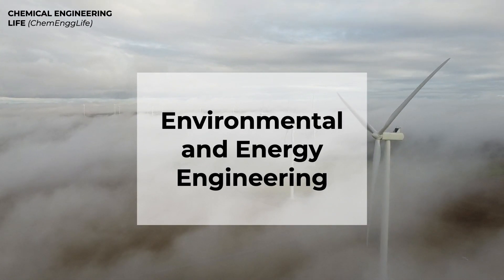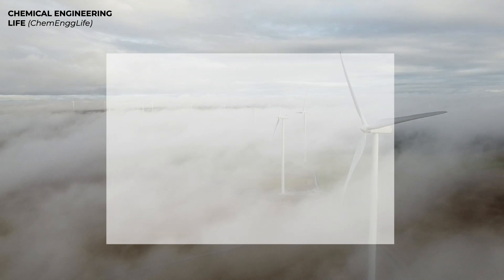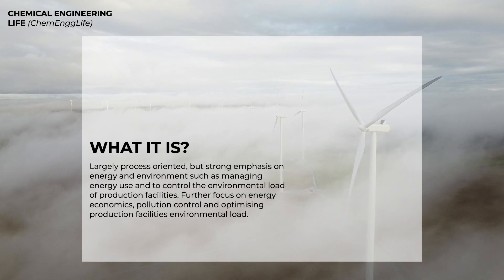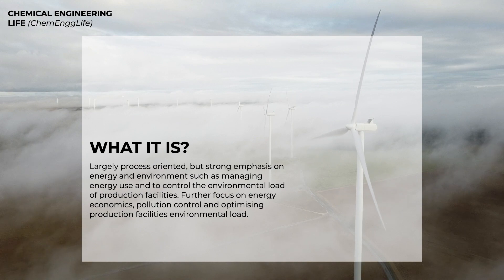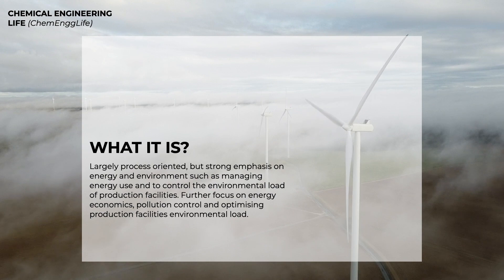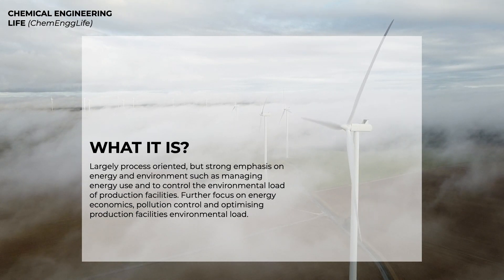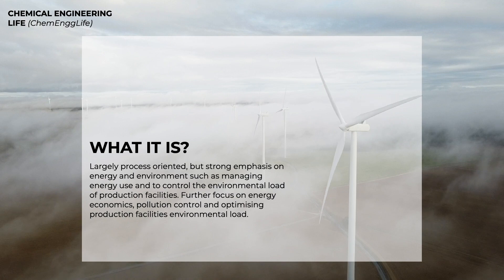Another specialization line for chemical engineers is the environmental and energy engineering line. Now, many people tend to confuse this with the actual environmental engineering degree, but you have to remember that as a chemical engineer, you don't necessarily learn about solving climate change or about the weather or any other topics that you normally would learn in a core environmental engineering area. But rather, as a chemical engineer, this specialization is focused on learning about how you can reduce the energy use and to control the environmental load of production facilities.